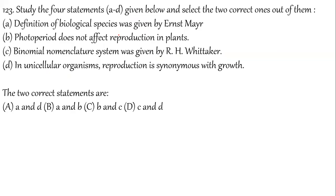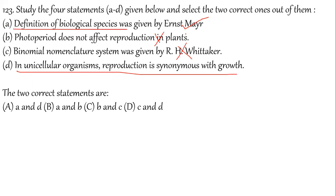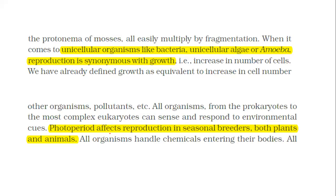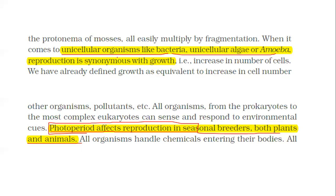Question 123: Study the following four statements and identify the correct ones. Definition of biological species was given by Ernest Mayr — correct. Photoperiod does not affect reproduction in plants — wrong. Binomial nomenclature was given by Linnaeus — not R.H. Whittaker. In unicellular organisms, reproduction is synonymous with growth — correct. Photoperiod affects reproduction in both animals (seasonal breeders) and plants. So A and D are correct — option A is the answer.